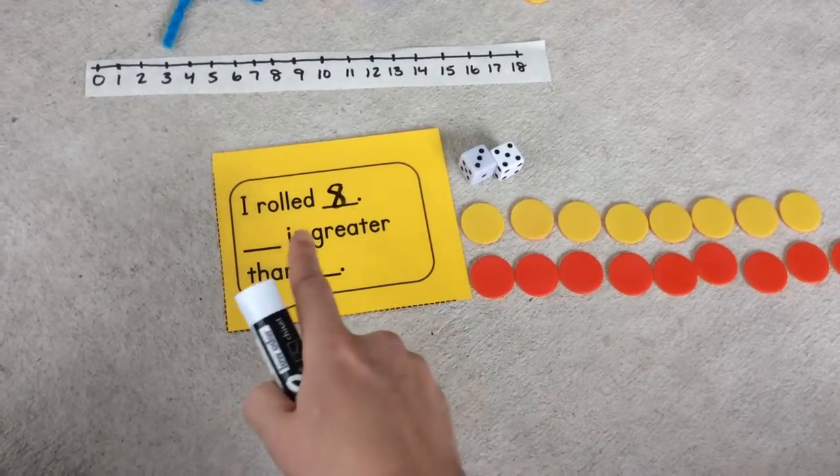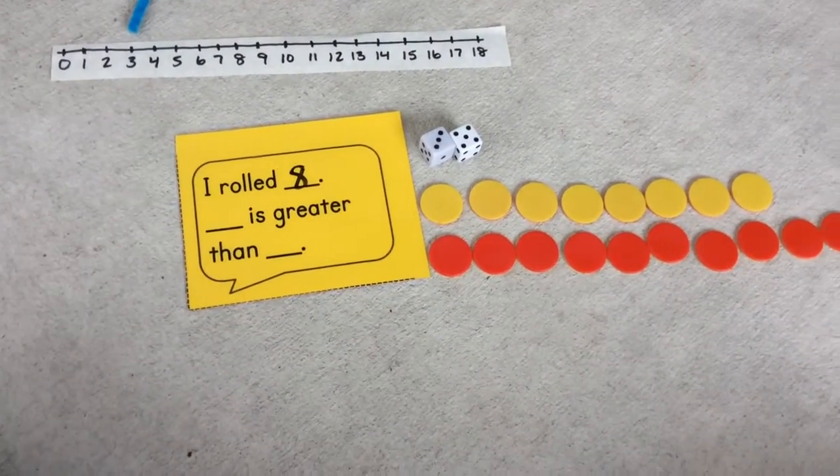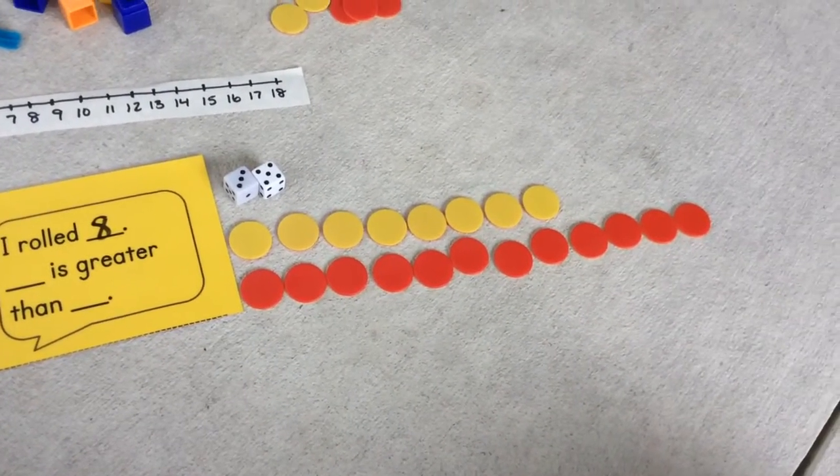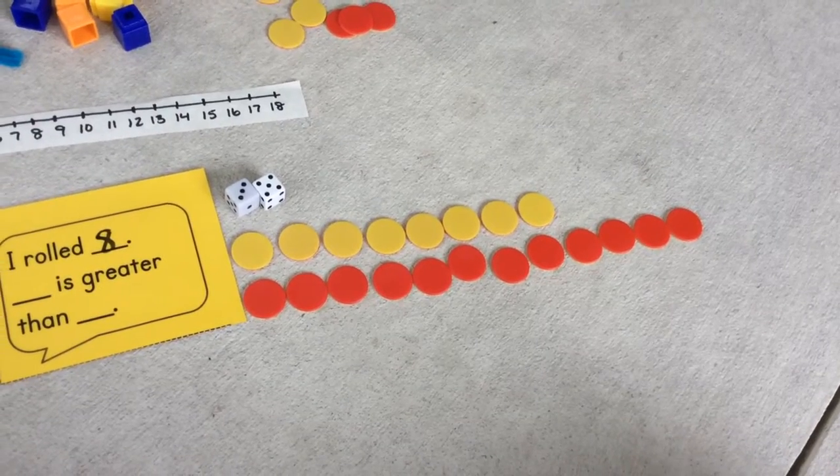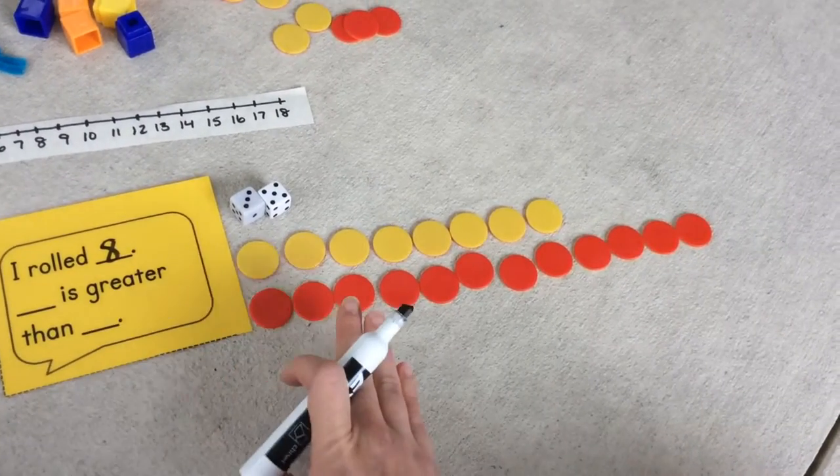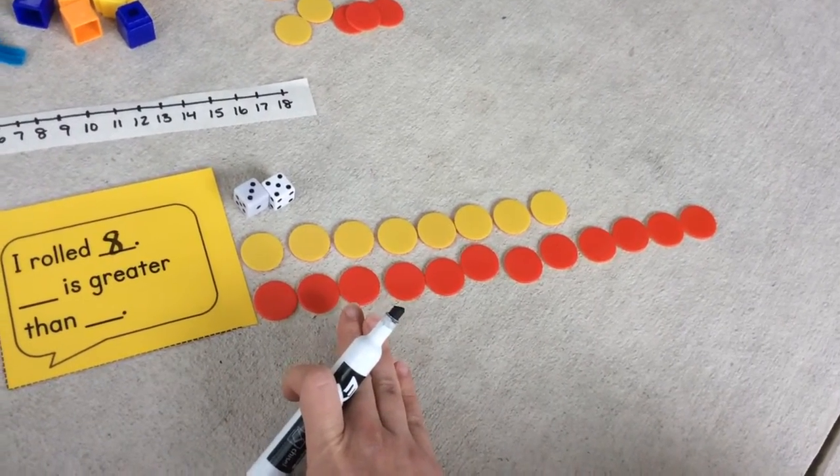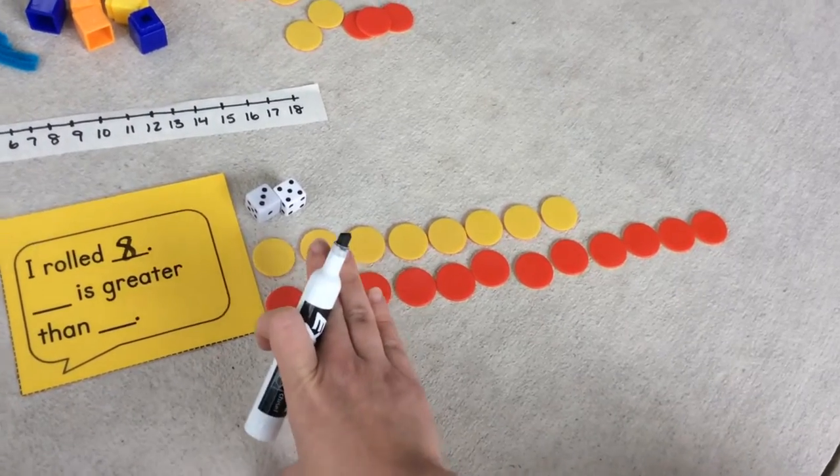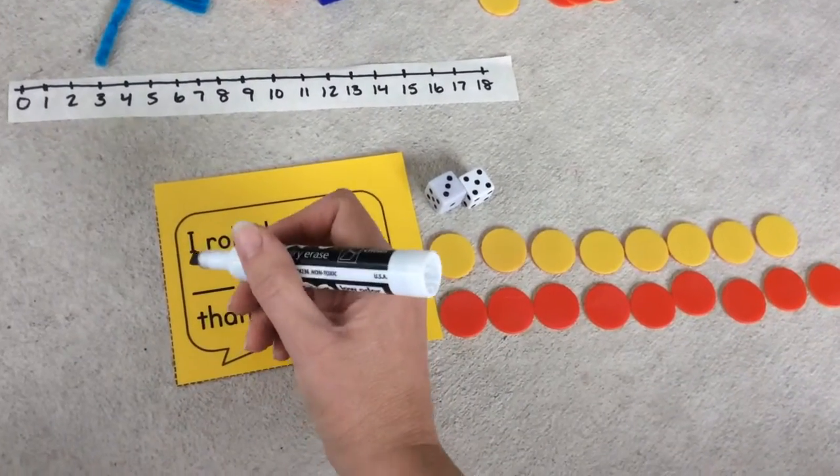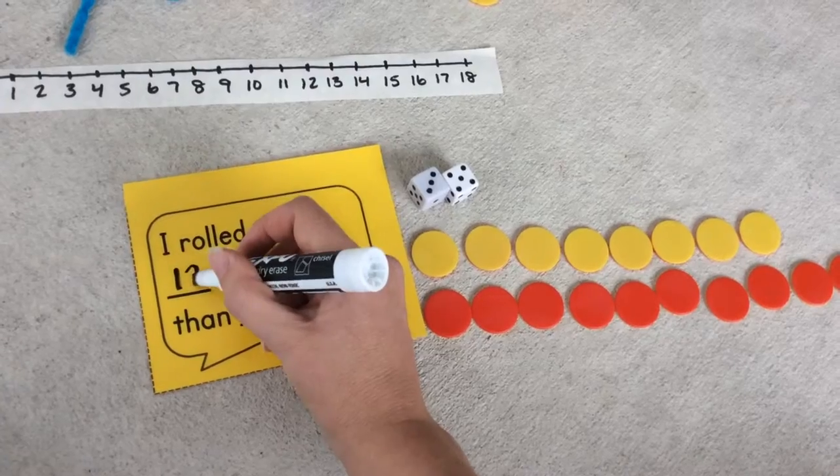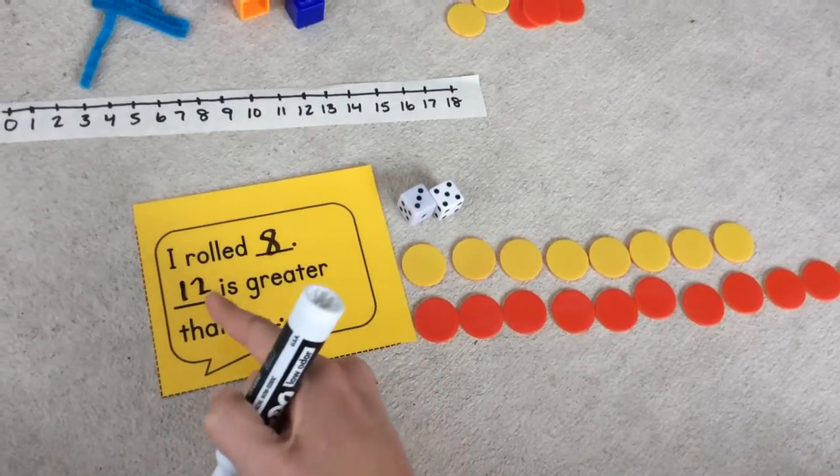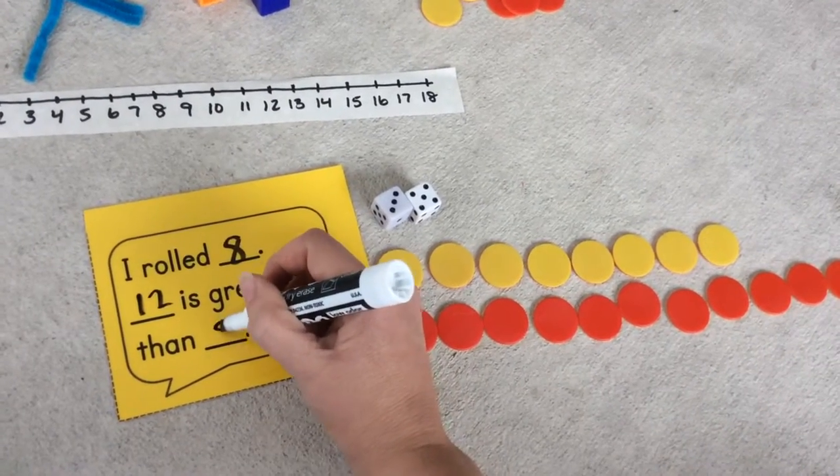Blank is greater than blank. Let's look at my sets. Which one is greater than? My red, 12. 12 is greater than eight. So I'm going to write 12 is greater than eight.